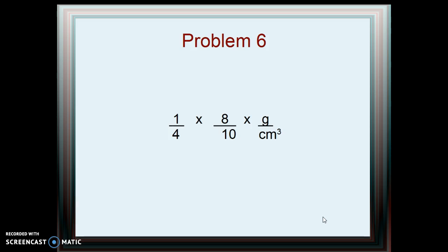Now, how about 1/4 times 8/10 times grams divided by cubic centimeters? Well, 8 over 4 is 2, so the answer is 2/10 times grams divided by cubic centimeters, or 1/5 grams divided by cubic centimeters, or 0.20 grams per cubic centimeter.